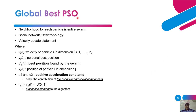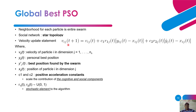In global best PSO, the neighborhood of each particle is the entire swarm. The star topology network is used. The velocity update equation is: V_ij(t+1) = V_ij(t) + c1·r1_j(t)·(y_ij(t) − x_ij(t)) + c2·r2_j(t)·(ŷ_j(t) − x_ij(t)), where the first term is the local best contribution and the second term is the global best contribution.